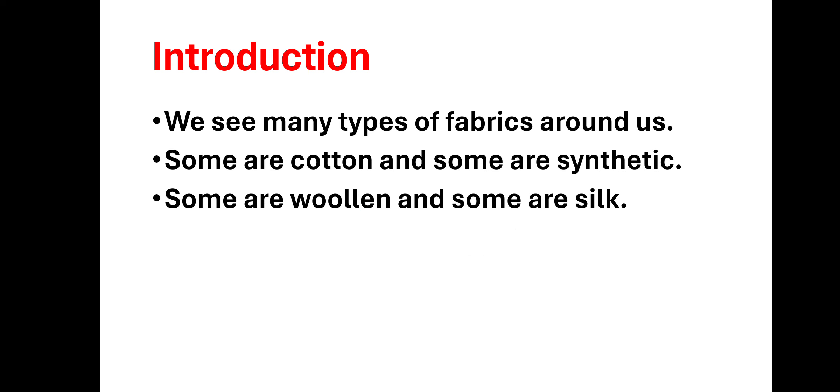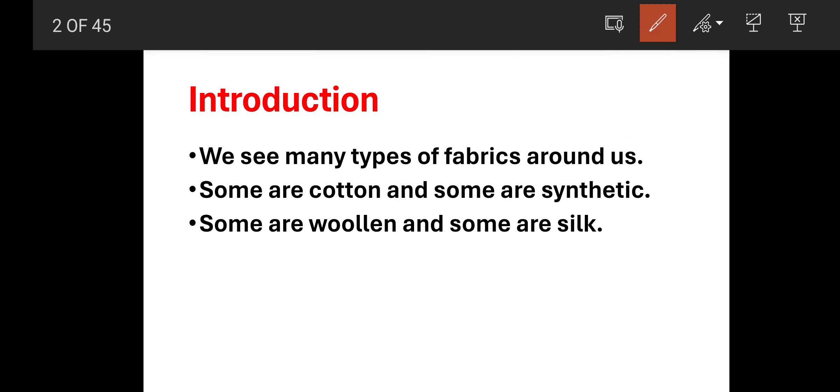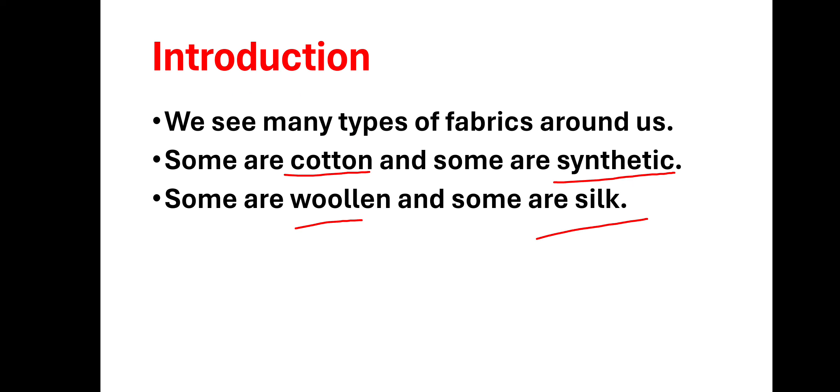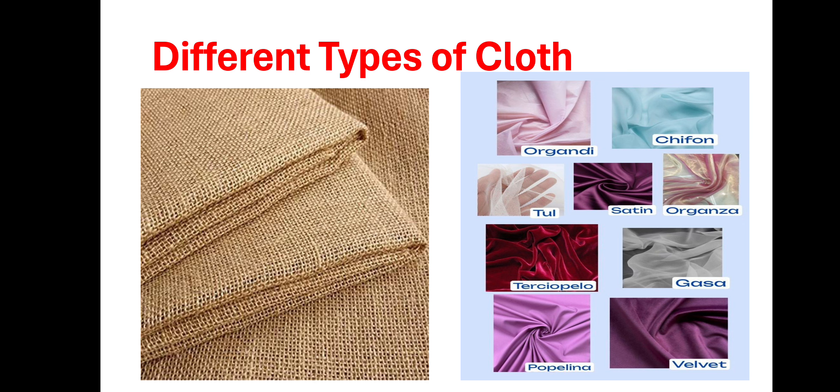We see many types of fabrics around us — bedsheets, curtains, our clothes. They are made of different types of fabrics: some are made of cotton and synthetic, some are woolen, and some are silk.